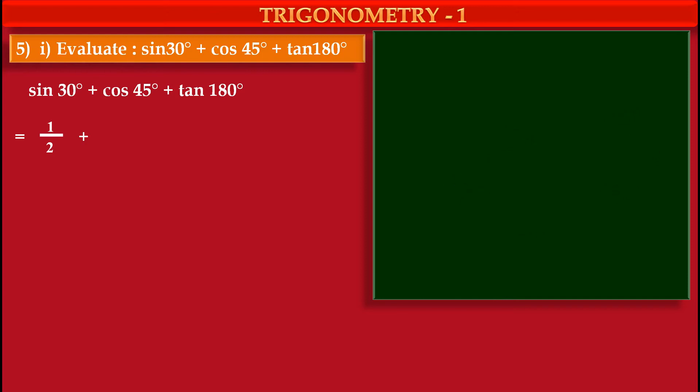Now we have to find value of cos 45°. So to understand it properly, we have to draw one triangle having angles 45°, 45°, 90°. We know the ratio of length of sides of 45°, 45°, 90° is 1 is to 1 is to root 2.